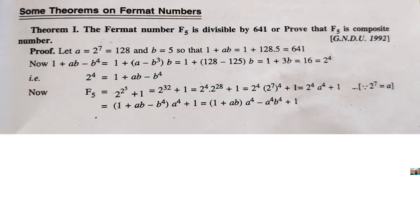So, we have a theorem. Fermat Number f5 is divisible by 641. It means it is a composite number. We have to prove it now. How to prove it? Let's start.